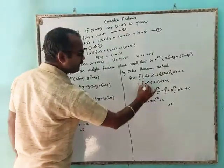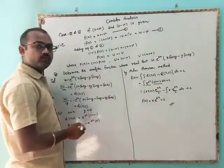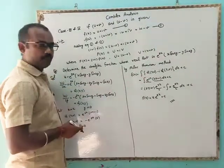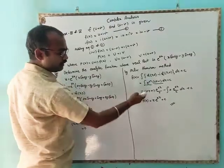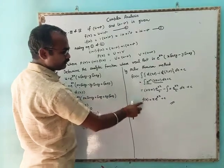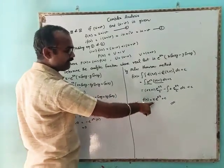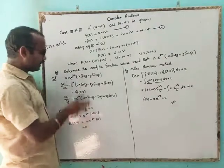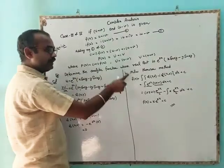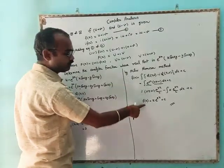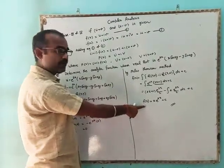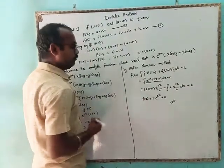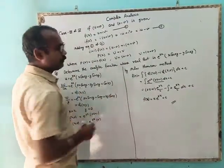Now we use integration by parts to evaluate ∫ e^(2z)(2z + 1) dz. After integrating, f(z) = z·e^(2z) + c. This means we have found f(z) directly as a function of z. The example is now completed.